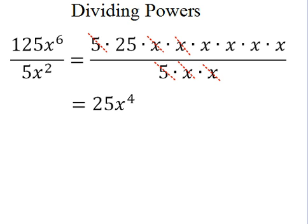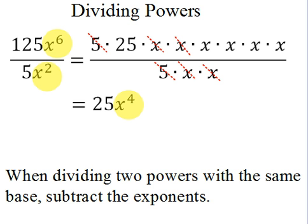You can see that 4 x's are left on the top. From this, we can make a general rule: when dividing two powers with the same base, all you need to do is subtract the exponents. So x to the sixth over x squared can be rewritten as x to the sixth minus 2, which equals x to the fourth.